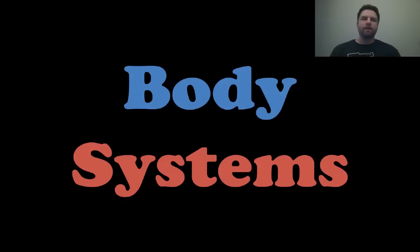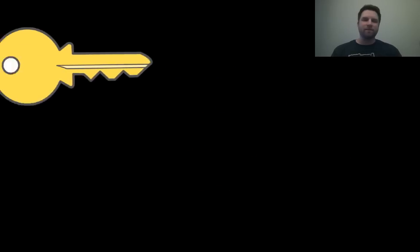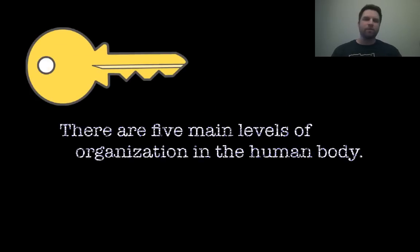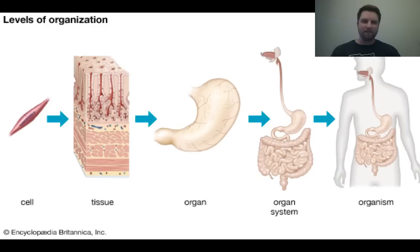Hey everyone, it's Mr. Veve and this lesson is on body systems. So let's get right into it with our first key concept. There are five main levels of organization in the human body. We need to understand these before we can actually understand all of the 11 systems. So let's look at these organization levels.